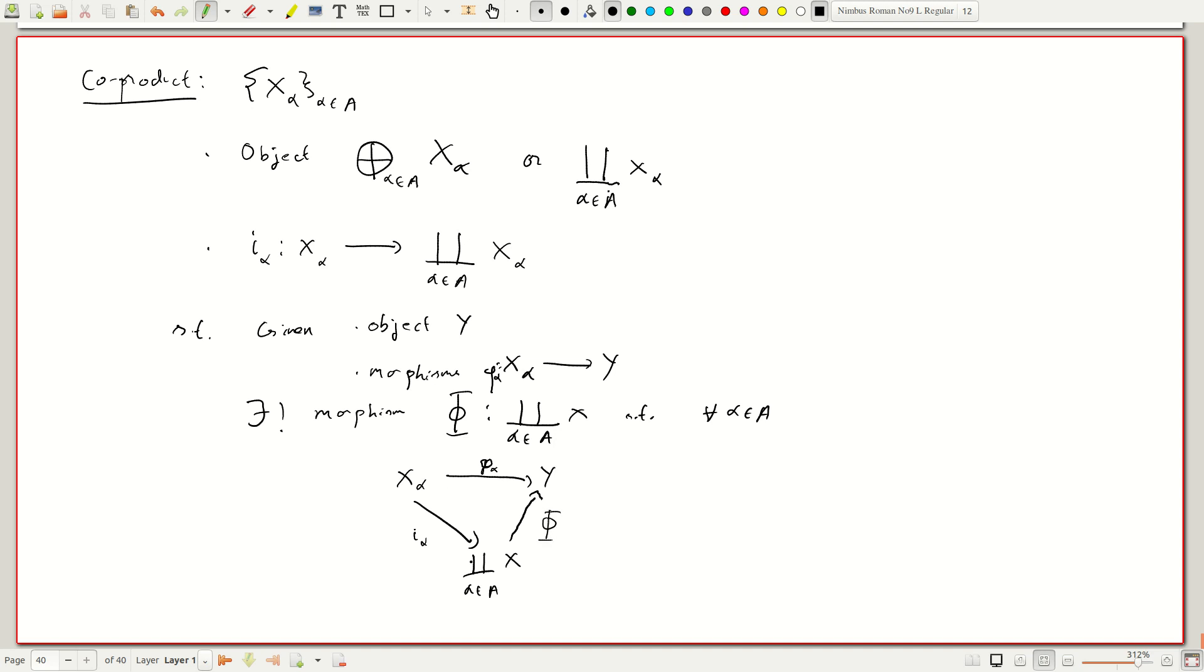Just to emphasize how this is the other one upside down, in the previous case we had maps which were called phi_alpha but they were in this direction, and instead of having a product we had the coproduct here. Instead of having maps i_alpha we had p_alpha which were projections which went in the opposite direction. In that case we had Phi going from Y to the product. All arrows are systematically reversed in the data and in the conclusion. That's why it's called a coproduct.